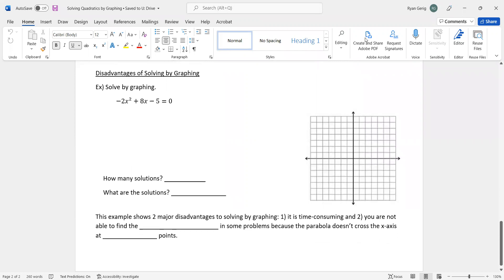Now, I'm not going to sugarcoat it. I'm going to tell you that there are some major disadvantages to graphing. So we're going to go ahead and solve this one to kind of see some of the disadvantages. So x = -b/2a. So 8, -2. So that's -8/-4. x = 2. Put 2 in for x. You get 4 times -2 is -8. 8 times 2 is 16. So -8 + 16 is 8. 8 - 5 is 3. So (2, 3).